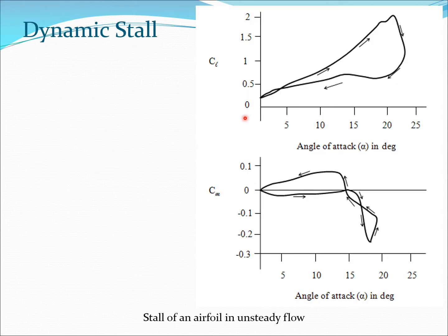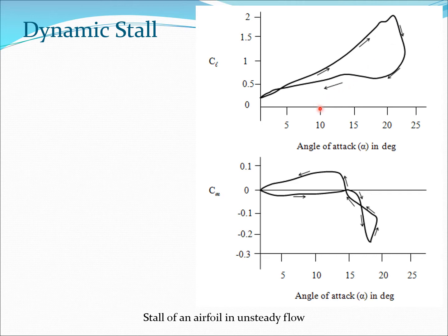Looking at the CL versus alpha curve, in dynamic stall CL goes up all the way — this may extend to 20 degrees or more — and then there is a dramatic fall, followed by flow reattachment and a return to lower values. The alpha cycling with respect to time produces this kind of hysteresis loop. Importantly, the CL value can be much higher than what is obtained in static stall, and the fall in lift is delayed from around 12–15 degrees to 20 degrees or greater. This can be useful for maneuvering, but the large loads generated must be accounted for in structural design.